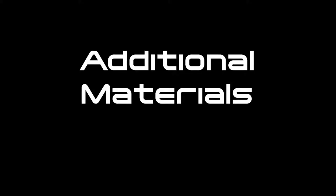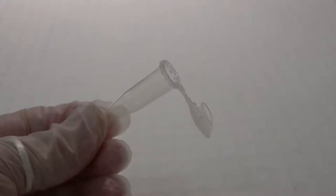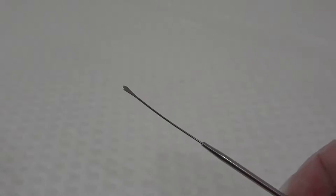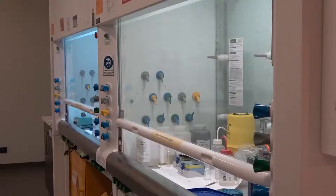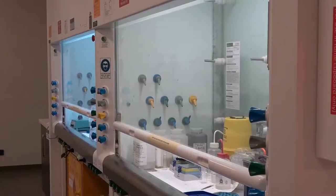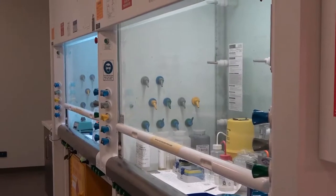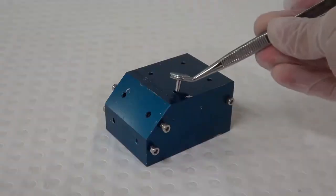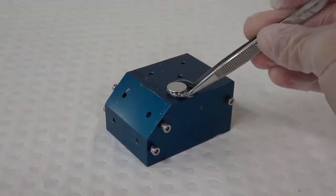Additional materials you may need if preparing dry nanoparticle samples include a microcentrifuge tube, a small spatula, a ducted fume cupboard, and a pin stub holder.